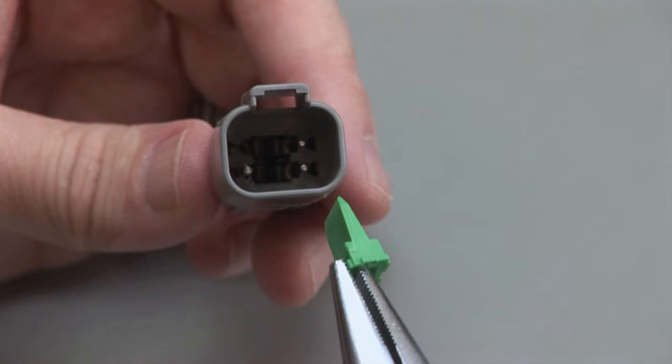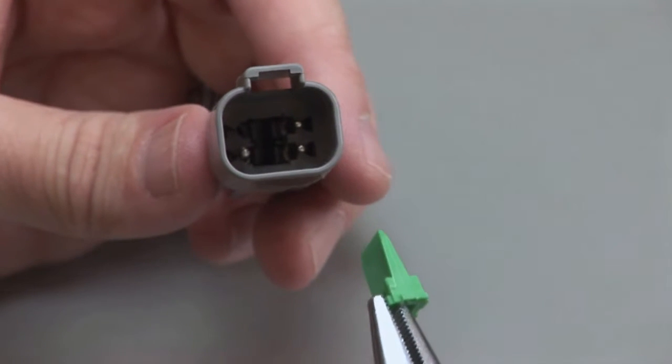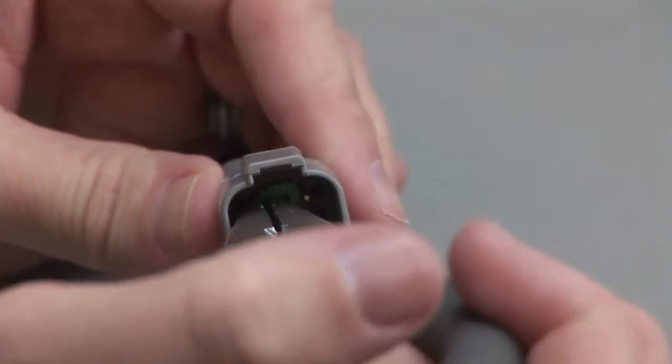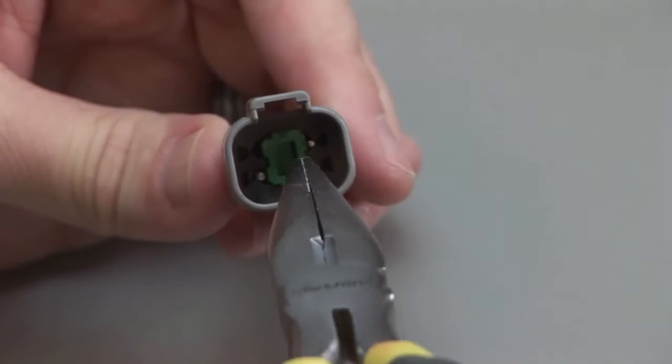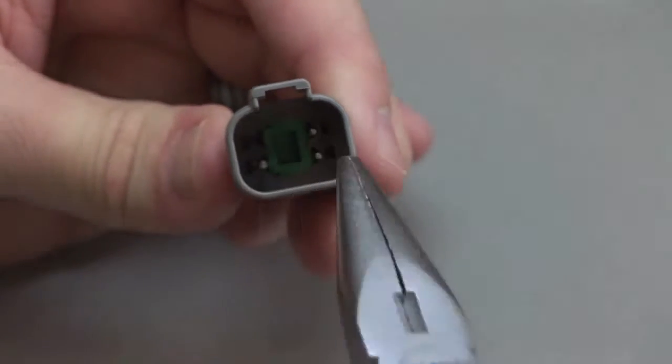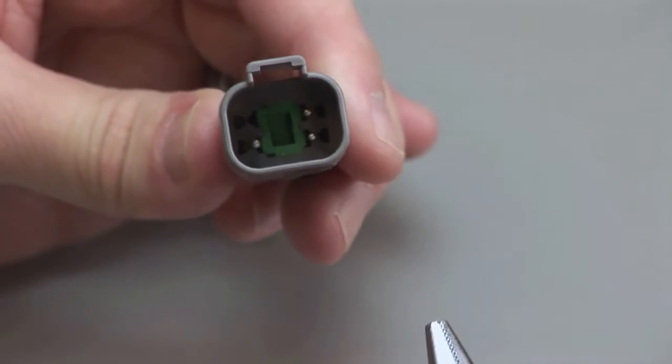To insert the wedge lock in the receptacle housing, select the appropriate wedge lock. Carefully align the wedge lock between the locking fingers in the interface of the receptacle. Apply downward pressure until a click is heard and felt.